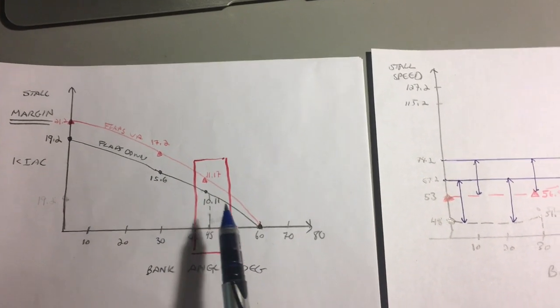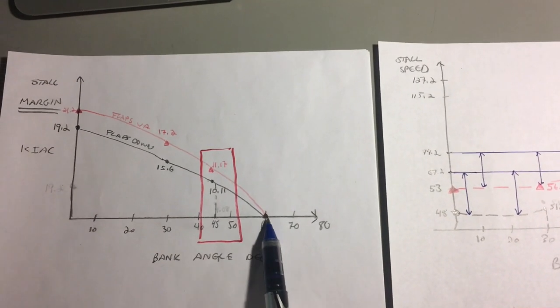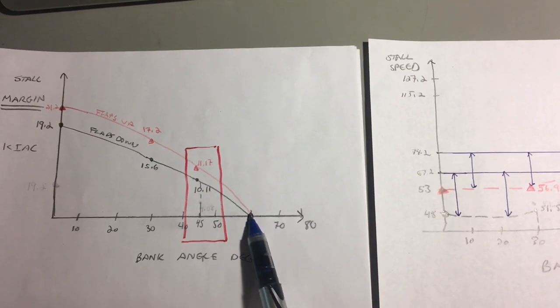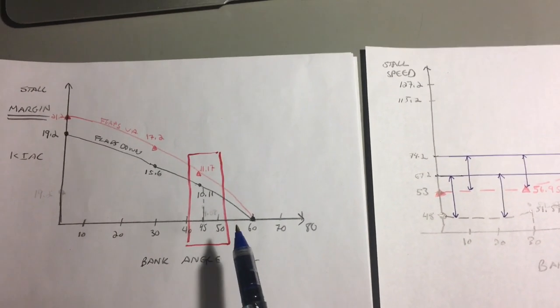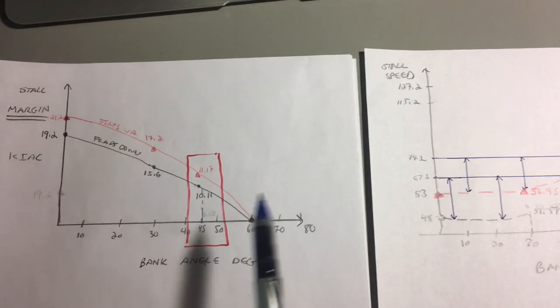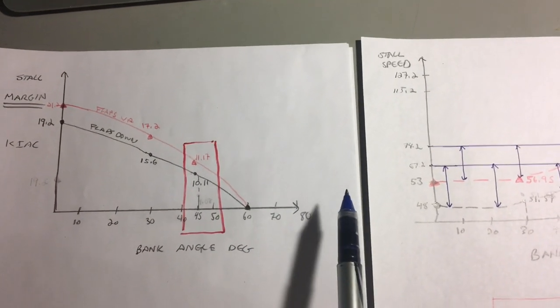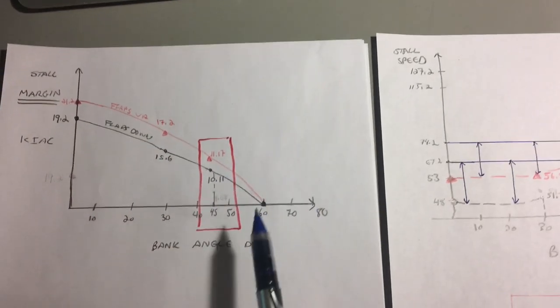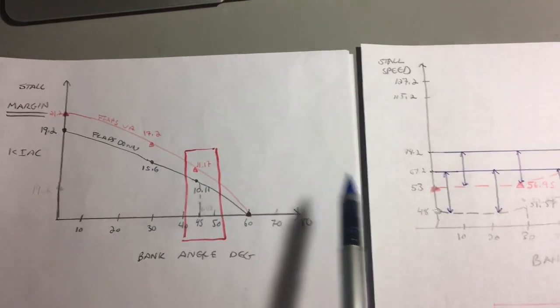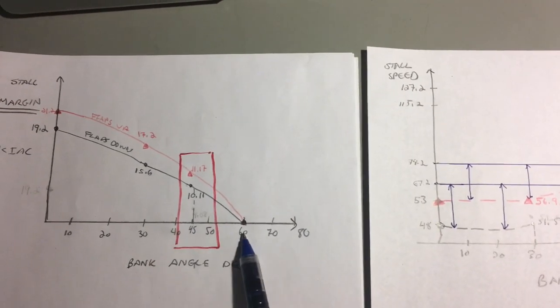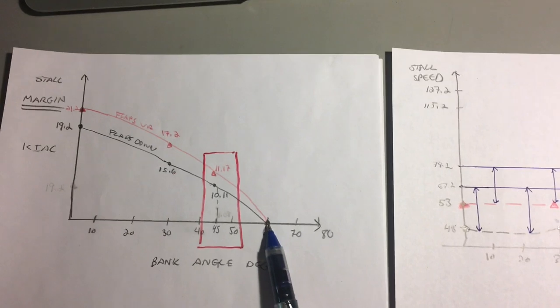If we continue we can see that there's no margin essentially, you will be stalled at 60 degree bank angle and that's precisely because the approach speed was 1.4 times VSO and you have a 40% increase in stall speed at 60 degrees bank, so there's no margin left over.